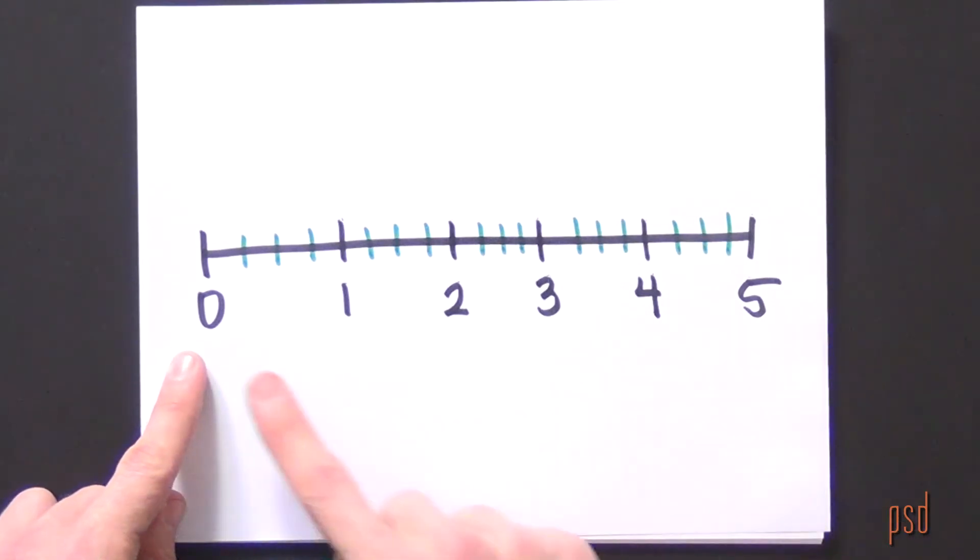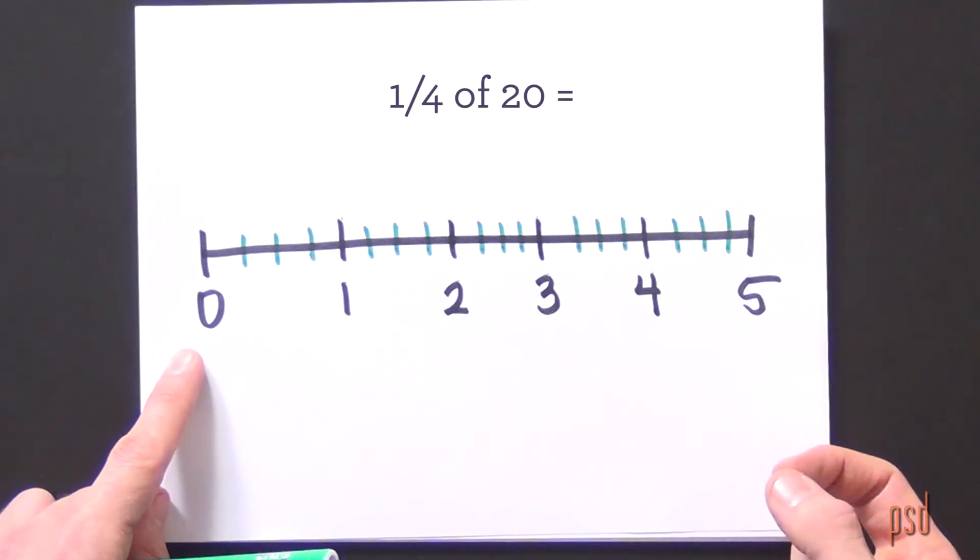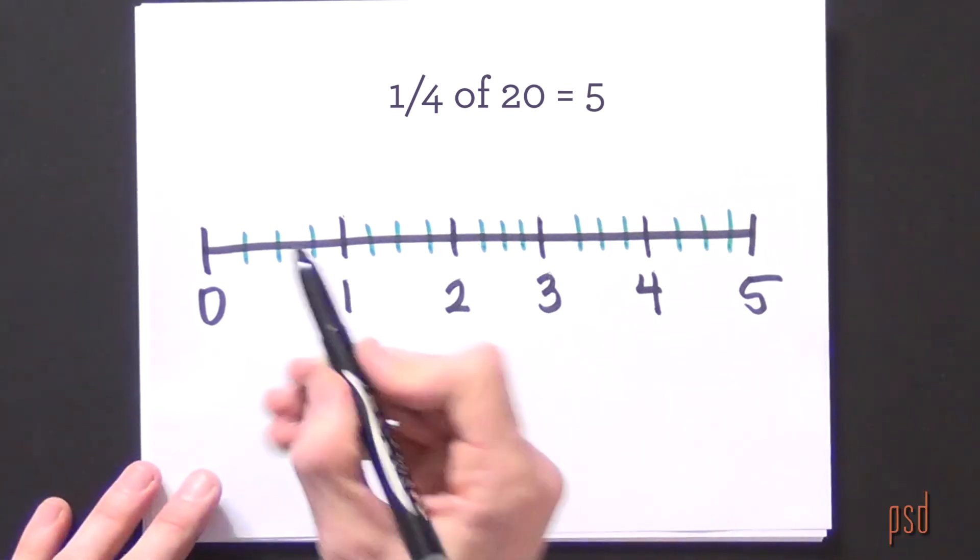Essentially, I'm saying, here's my whole piece of string. It's five feet long. What's a fourth of that? When broken into 20, I can think, well, what's a fourth of 20 tick marks? A fourth of 20 is five tick marks.